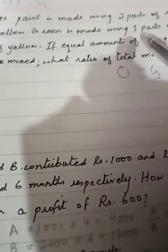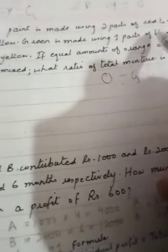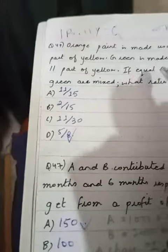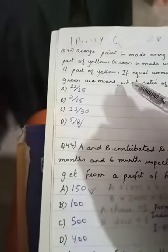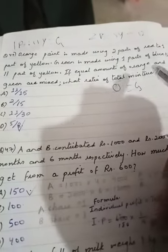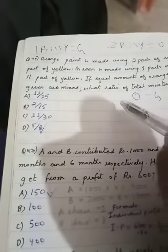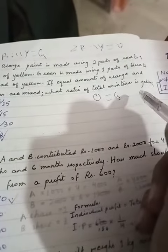Orange paint is made using two parts of red to one part of yellow. Green is made using one part of blue to eleven parts of yellow. If equal amounts of orange and green are mixed, what ratio of the total mixture is yellow?